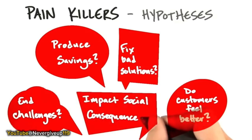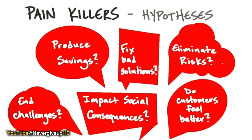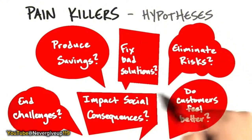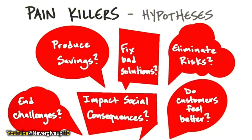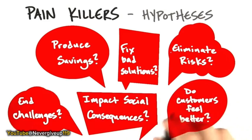Your hypotheses should include which one of these painkillers — or some others, since this list isn't exhaustive — applies to your product. You need to be able to articulate, based on your interactions outside the building with customers: here's what they said, and when I bounced our product off of them, they said yeah, that really solves this pain. And more importantly — is it an important pain?